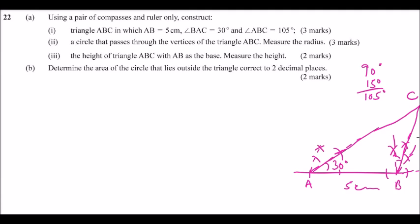From there, you measure the radius. Then find the height of triangle ABC with AB as base — you drop a perpendicular from C. Then you measure that perpendicular line and determine the area. So that's how you go about this question, and it is possible to get all the marks. Let's do it.